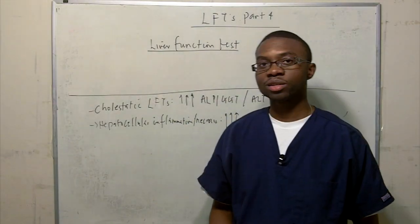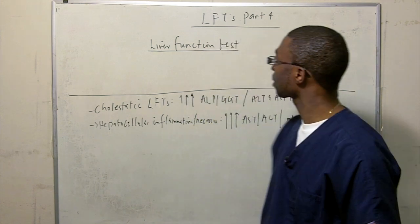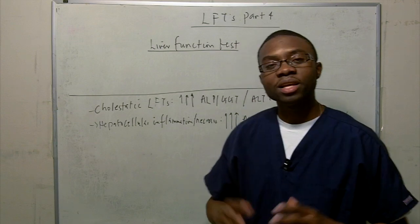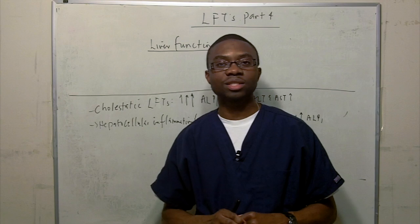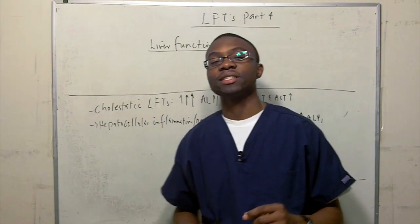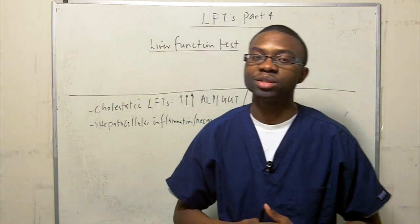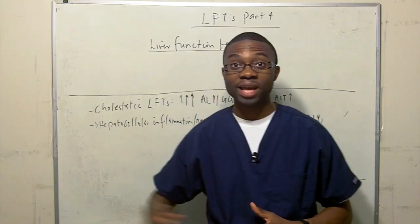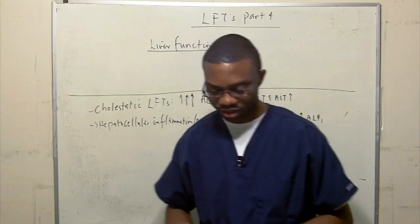This is the continuation of part 4 of liver function tests. The liver makes all clotting factors except factor 8. Factor 8 is actually bound to von Willebrand factor in the endothelial cells — you can watch the clotting cascade video for further details.